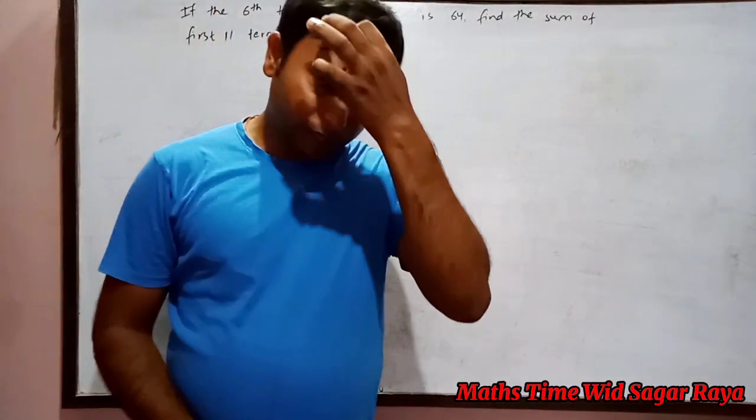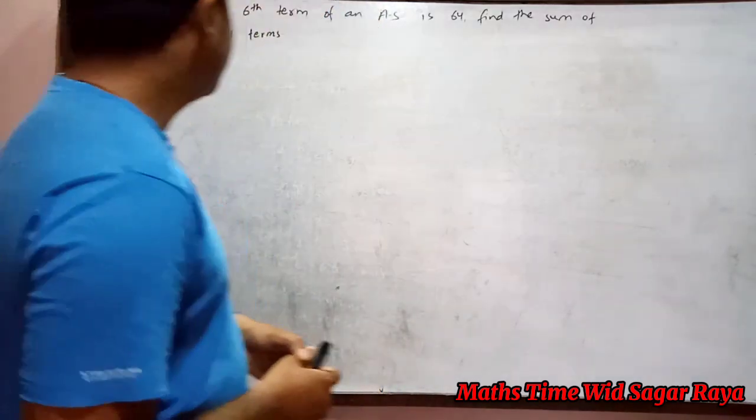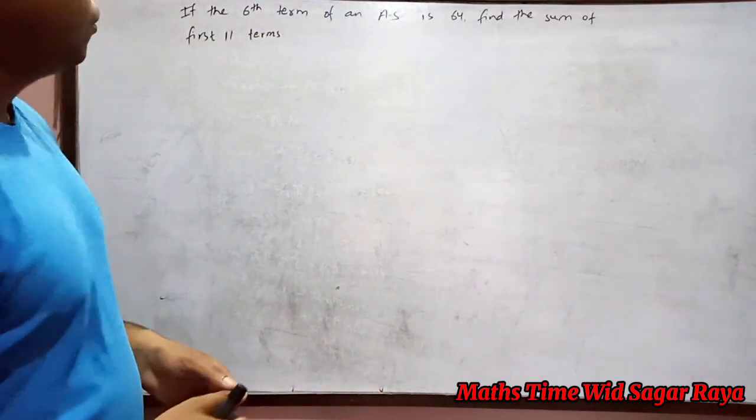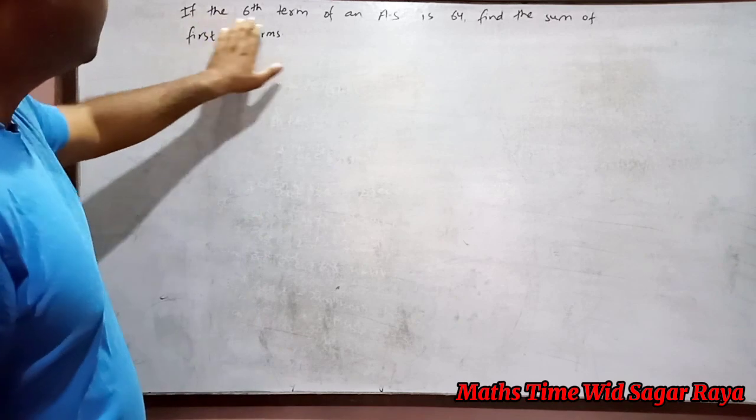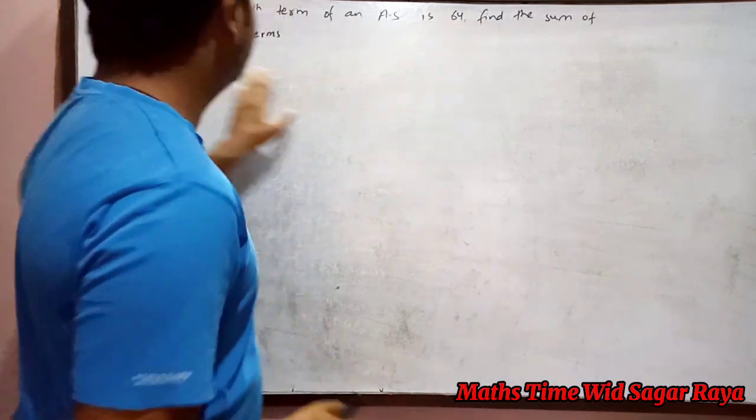Hello everyone, welcome to my channel Maths Time. Today I'm back with another question from the series, so without any delay let's go through the question. If the sixth term of an arithmetic series is 64, find the sum of first 11 terms.